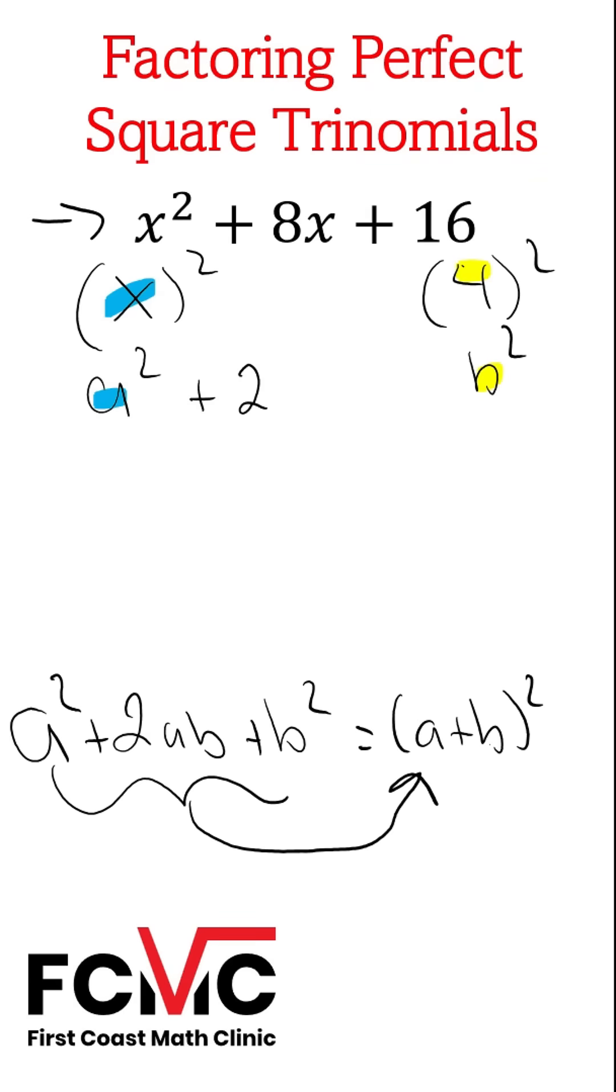Our middle term has to be 2 times a times b. It's our 2 times a times b here. So we'll have 2 times our a value, which is x, times our b value, which is 4. 2 times x times 4 is 8x.